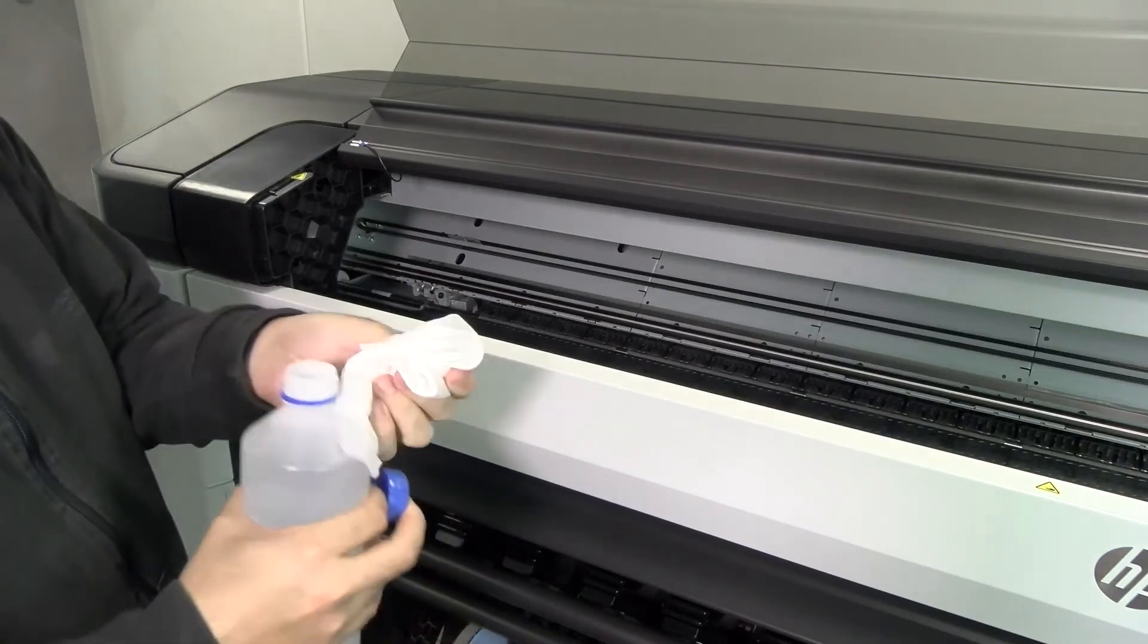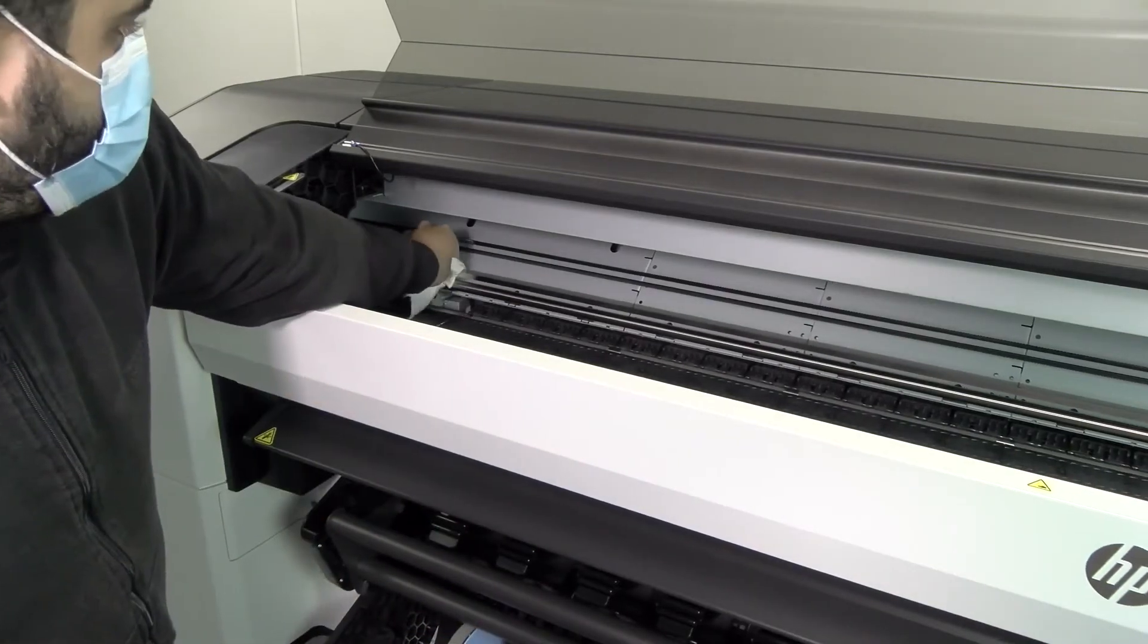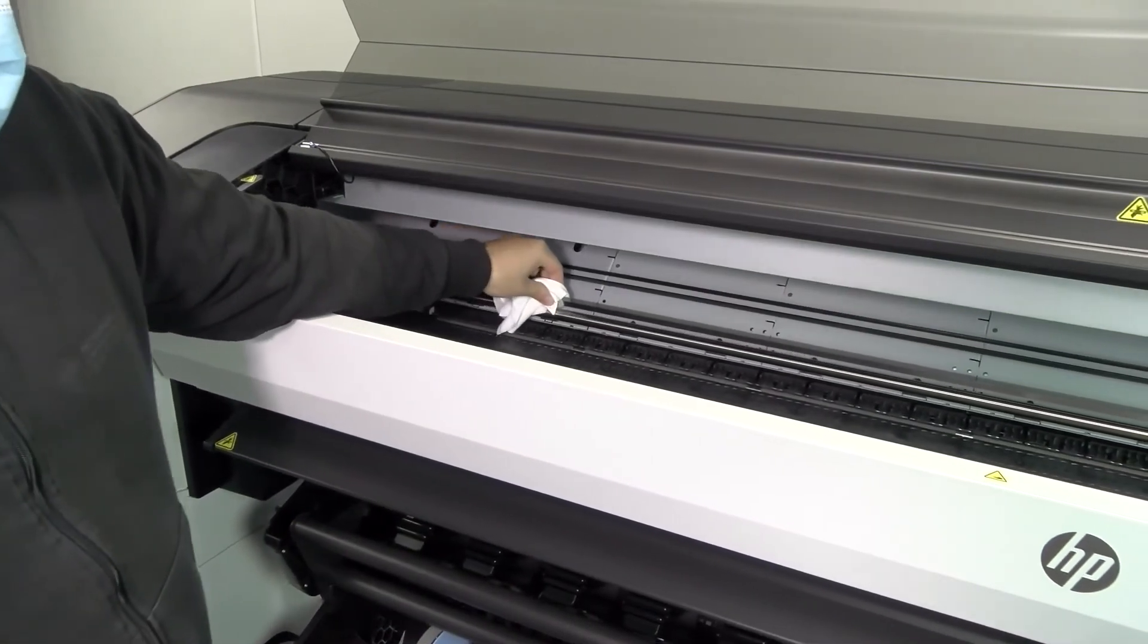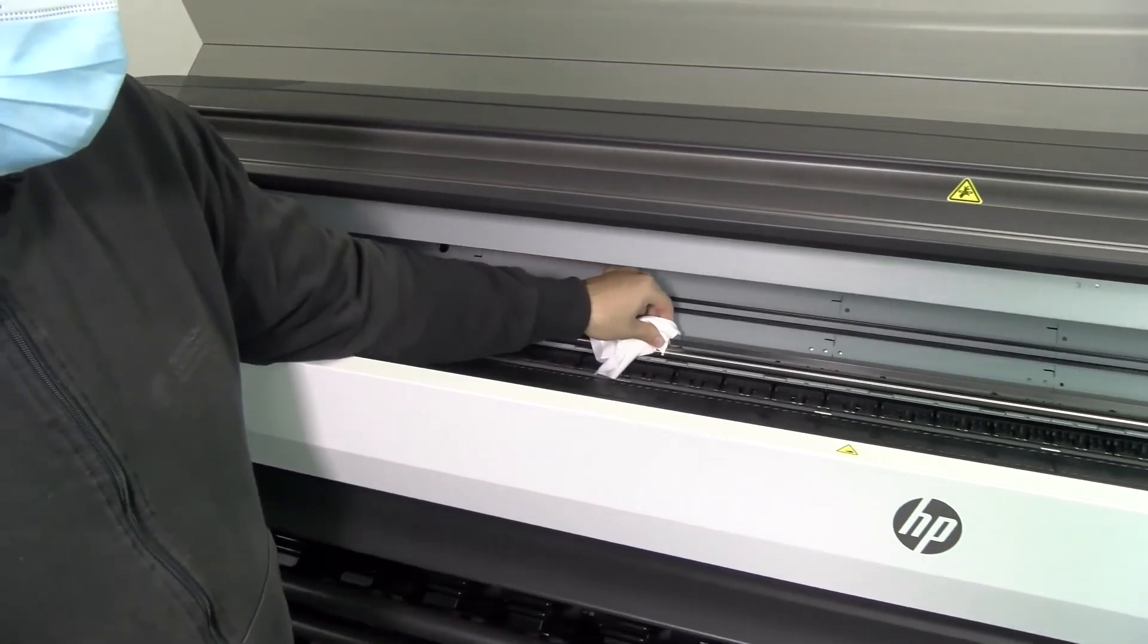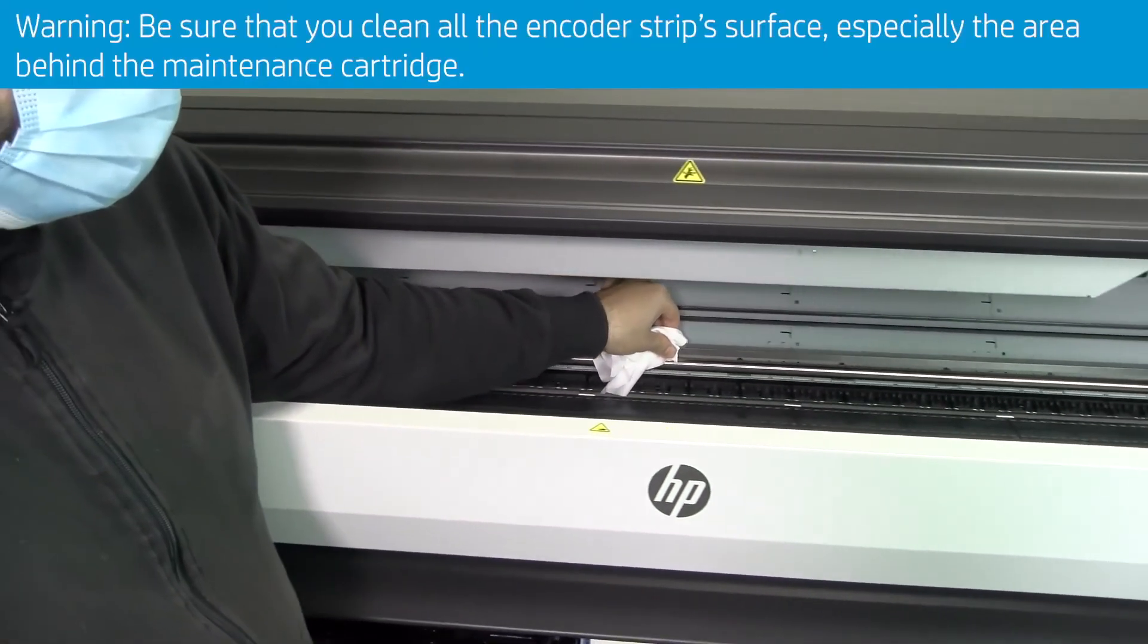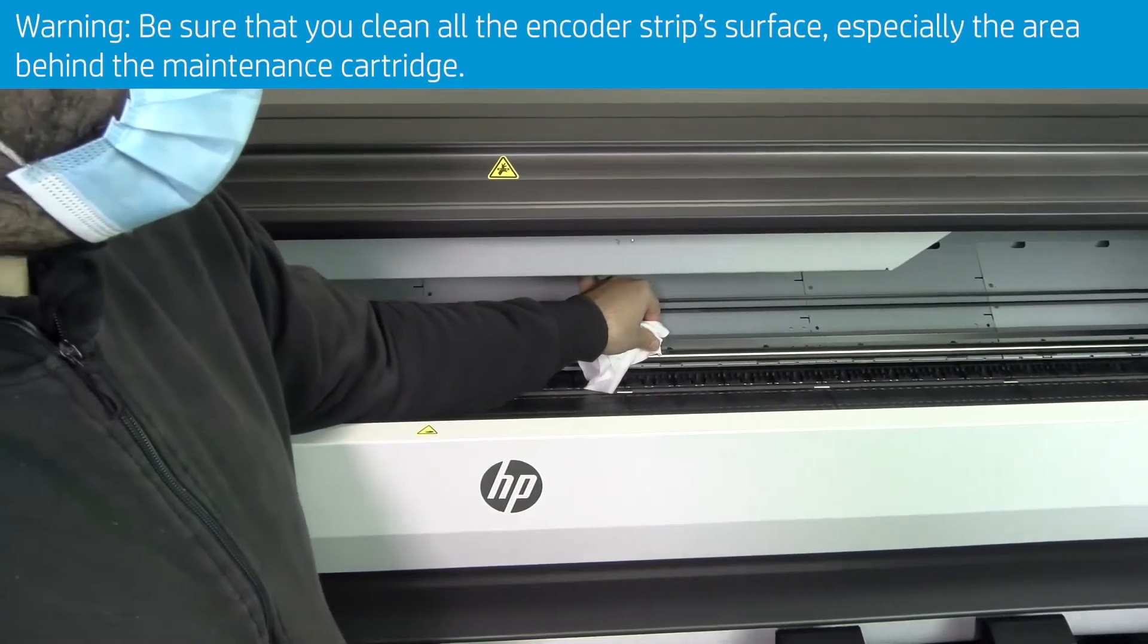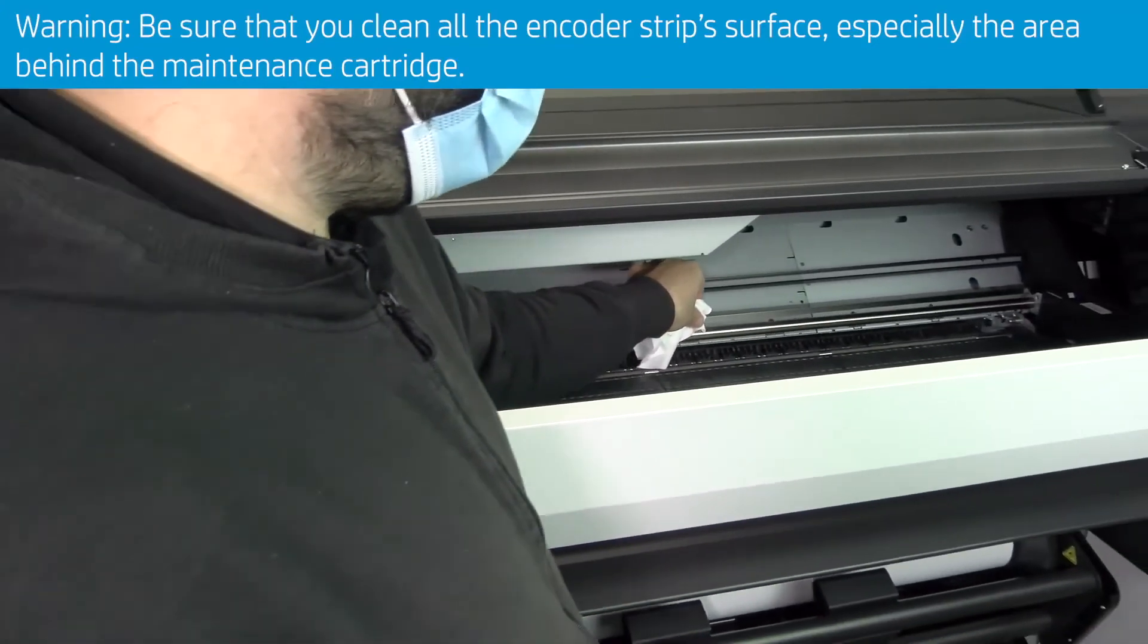Clean the encoder strip on both sides with a cloth dampened with water as instructed on the front panel, and tap continue when you are finished. Be sure that you clean all the encoder strip's surface, especially the area behind the maintenance cartridge.